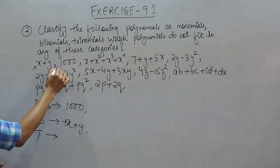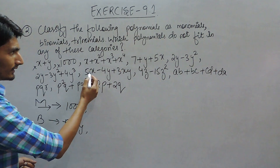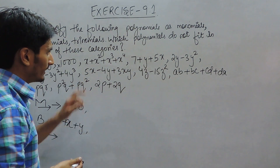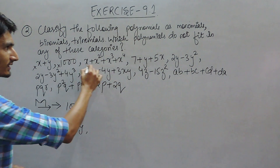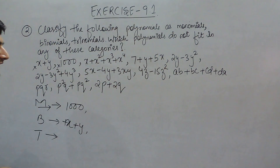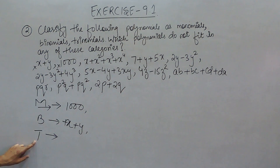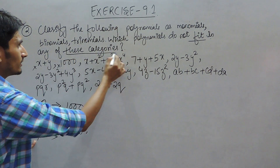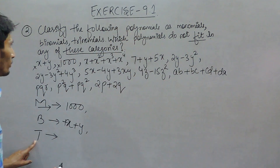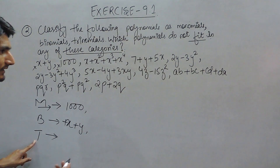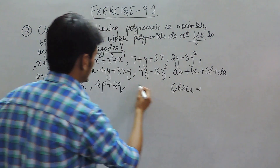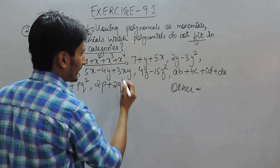These are cancelled out. This expression has 1, 2, 3, 4 — four signs, meaning four terms. But we have to find only those with three terms or fewer. So this expression should come in the category which does not fit in monomial, binomial, or trinomial — it should be placed in the 'other' category.